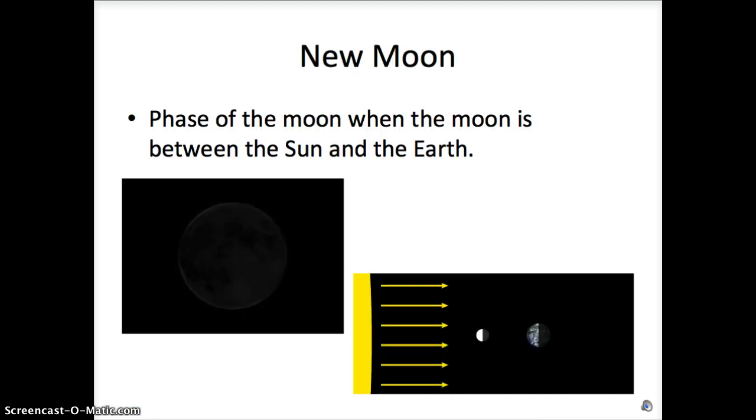The new moon is the phase of the moon when the moon is between the sun and the earth. You can see the sun lighting the moon. We don't see the lit side. What we see is the dark side.